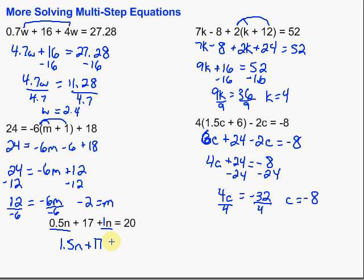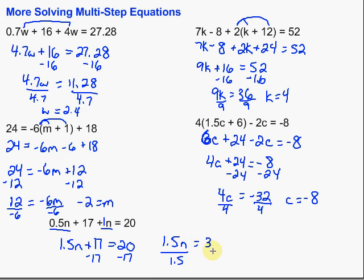We're just bringing down the stuff we didn't do anything with — equals 20. Now we want to get that n by itself, so we subtract 17 from both sides: 1.5n equals 20 minus 17 is 3. And finally, we divide by 1.5 on both sides to get that n by itself. The 1.5s cancel out, and 3 divided by 1.5 gives us 2, so n equals 2.